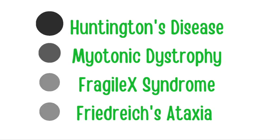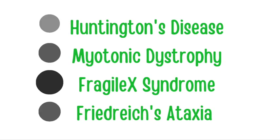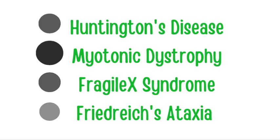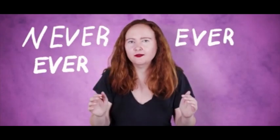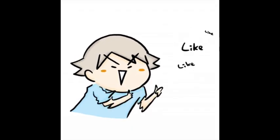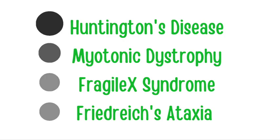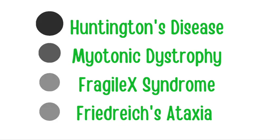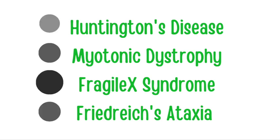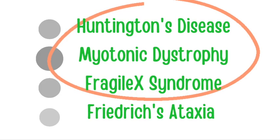There are four diseases that occur due to trinucleotide repeats that are extremely high yield for the USMLE, and I'll be showing you how you will never ever forget them again. We'll be talking about Huntington's disease, myotonic dystrophy, fragile X syndrome, and Friedrich's ataxia.